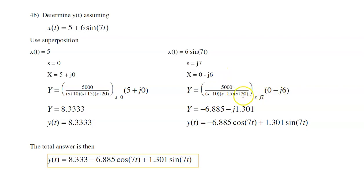Output is the gain times input. This is the gain everywhere. All I care about is what's the gain at J7. Times the input, I get a complex number. Real part means cosine, minus J means sine. So there's the output at 7 radians per second. The total answer then will be the sum of the two.